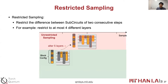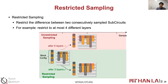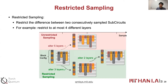We also propose restricted sampling, which restricts the difference between sub-circuits of two consecutive steps. For example, we set the maximum different layers to be 4. Then if we sample a circuit with 5 different layers, we will discard it and resample. If the circuit has 3 different layers, we can use it. For the next step, if only two layers are different, that is also a valid sub-circuit.